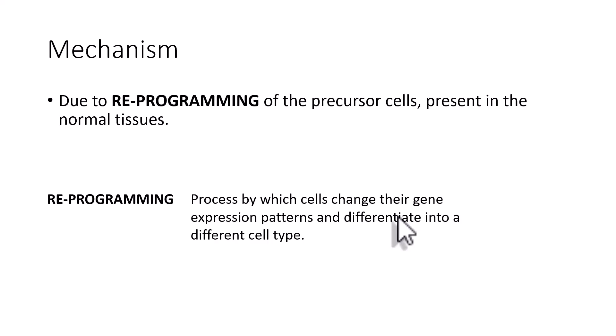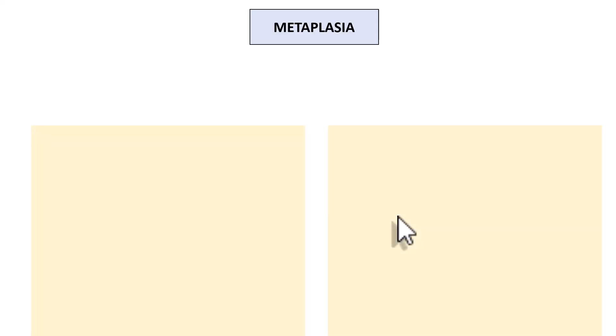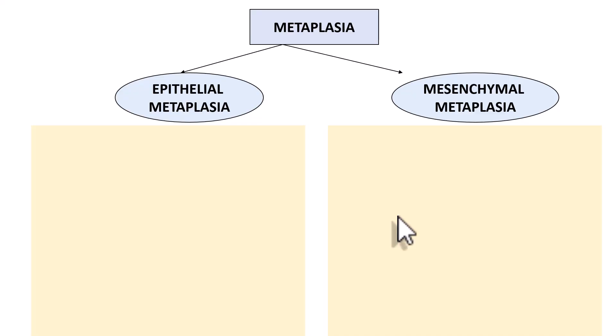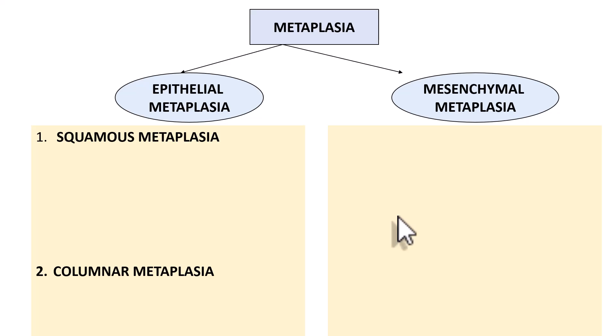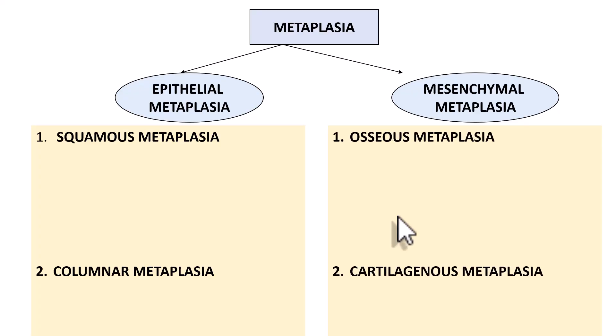Metaplasia can be broadly categorized into epithelial metaplasia and mesenchymal metaplasia. Under epithelial metaplasia, the common subtypes are squamous metaplasia and columnar metaplasia. Mesenchymal metaplasia examples include osseous metaplasia and cartilaginous metaplasia. When we say squamous metaplasia, the end result is conversion into squamous epithelium. Similarly, columnar metaplasia ends in columnar epithelium, and osseous metaplasia results in bone formation.